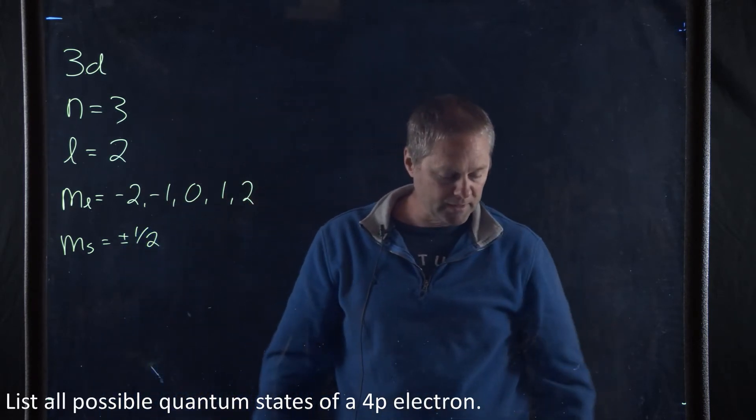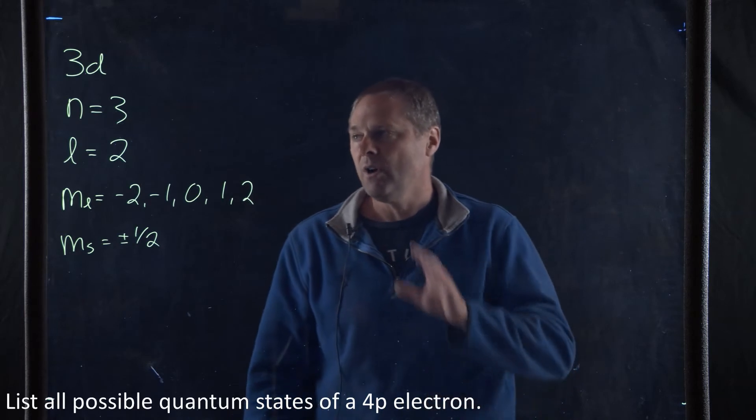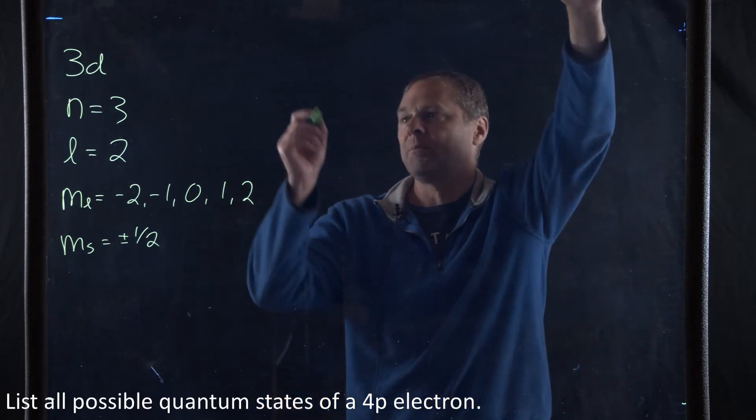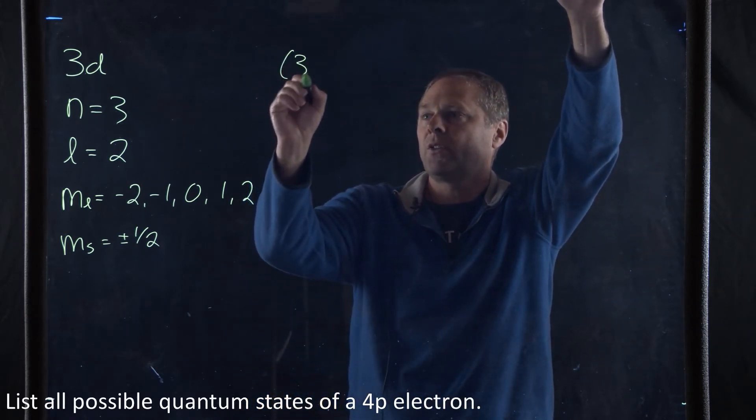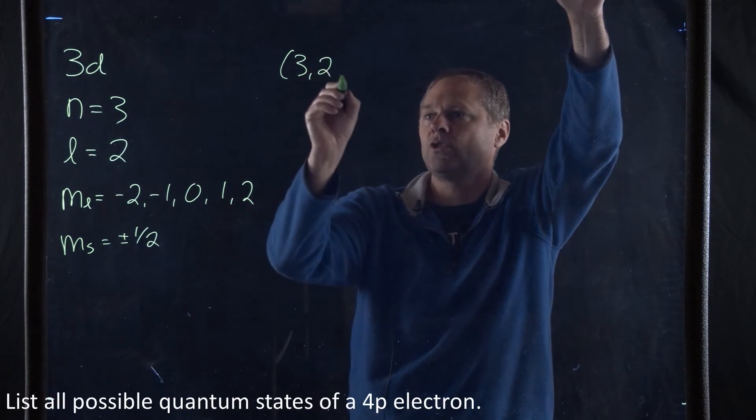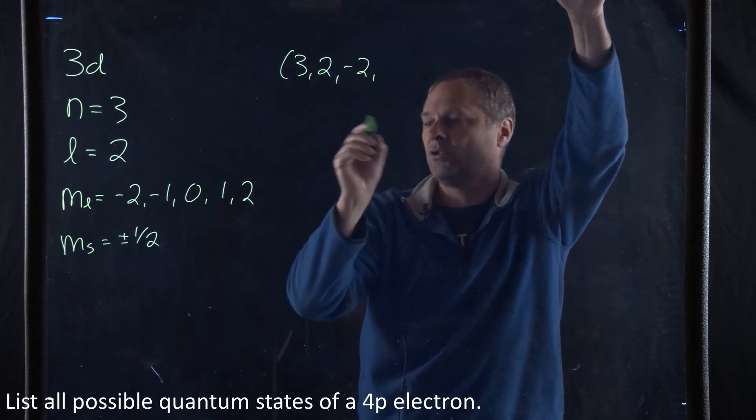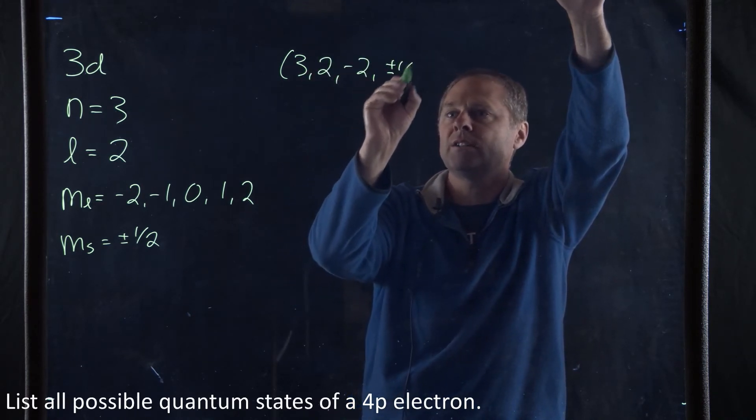And so we have to list all the possible quantum numbers for a 3d electron. So we have (3, 2, -2, ±1/2).